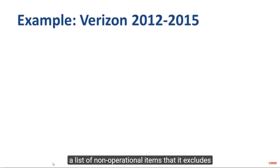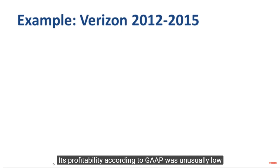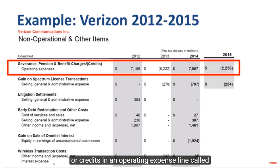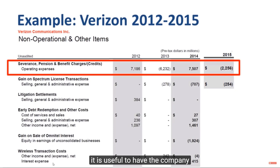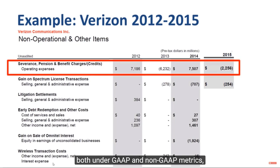Here's an example: Verizon Communications provides a list of non-operational items it excludes to get adjusted EBITDA and adjusted EPS. Its GAAP profitability was unusually low in 2012 and 2014, and unusually high in 2013 and 2015, mostly due to unusual charges or credits in a line called severance, pension and benefit — in the range of 6 to 7 billion dollars. If you want to do a long-term trend analysis, it's useful to have the company normalize the trend and exclude the noise. Verizon is very profitable both under GAAP and non-GAAP, and adjustments can go either way — results can become higher or lower when unusual items are excluded.